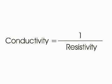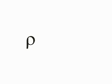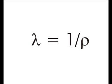Resistivity of a material is denoted as rho and conductivity of the material is generally denoted as lambda and it is equal to 1 by rho.